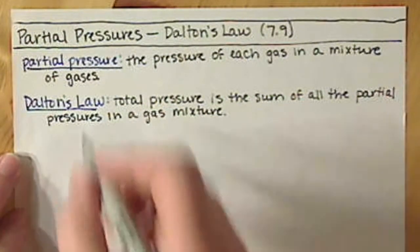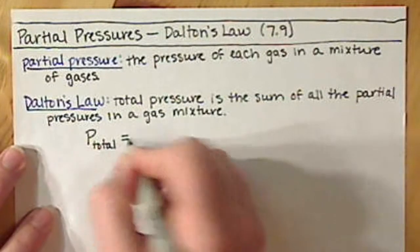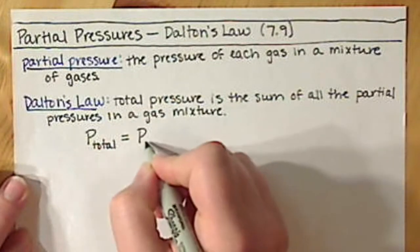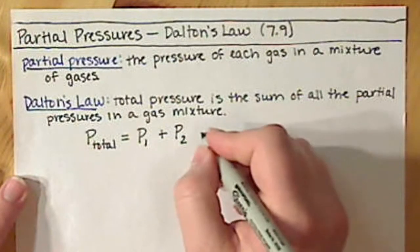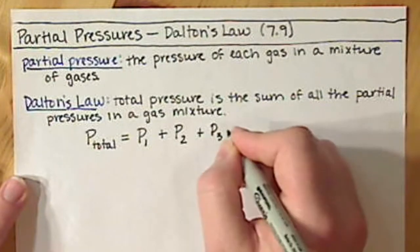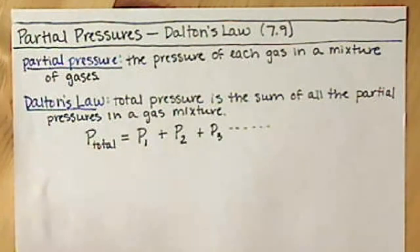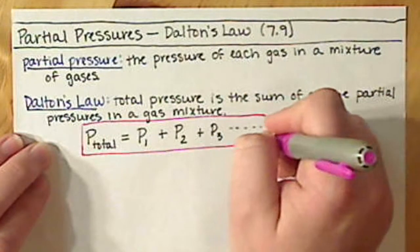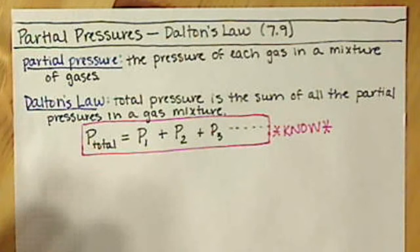Our equation for Dalton's Law: P_total — capital P with a subscript 'total' — is going to be the partial pressure of one gas plus the partial pressure of a second gas, plus the partial pressure of a third gas if you have it. However many gases you have, you just add those up. This is an equation you will want to know; it won't be given to you, but it's fairly simple and straightforward.